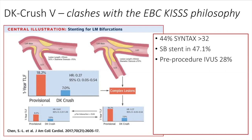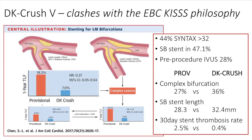When we look at the DK Crush 5 cohort, it was highly complex: 44% had a SYNTAX score in the upper tercile, the provisional group converted to side branch stenting in almost half of patients, and yet despite that complexity, only just over a quarter had image guidance. Complex bifurcation was a third of all cases, the side branch length for stenting was extreme — around 30 millimeters in both arms — and the stent thrombosis rate in the provisional group was 2.5%. There has been a lot debated about the quality of the provisional stenting undertaken.